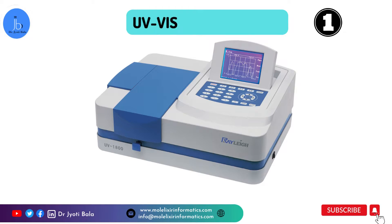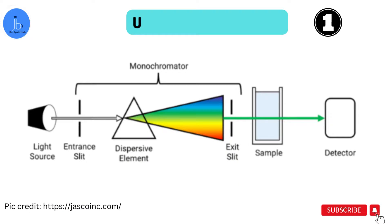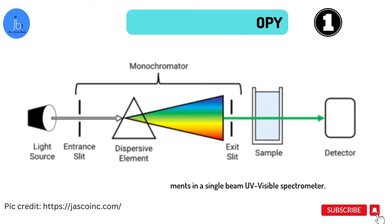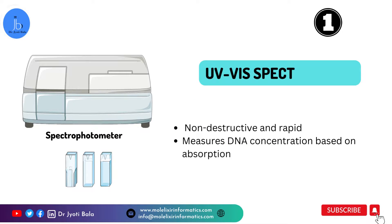Our first technique is UV spectroscopy, which is quite commonly used in molecular biology and biotech labs. It measures the absorption of UV and visible light by DNA molecules, providing valuable information about their concentration. UV spectroscopy is popular because it is non-destructive and rapid, measuring the concentration of DNA based on absorption. To perform such experiments, you need a spectrophotometer in your laboratory.